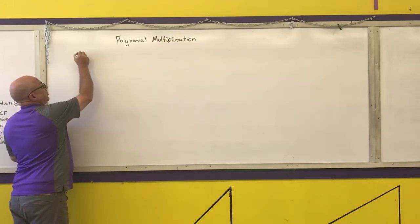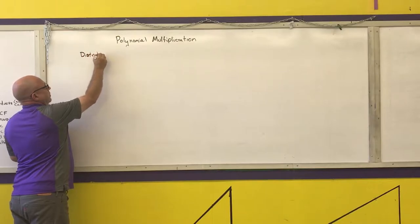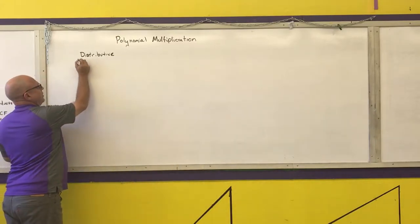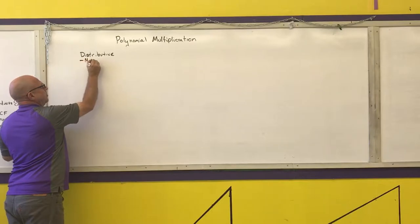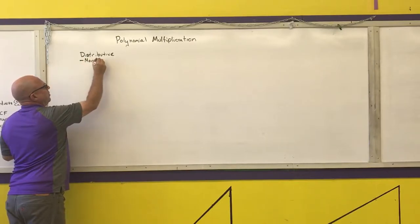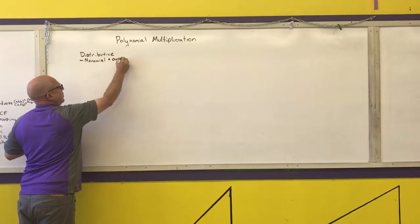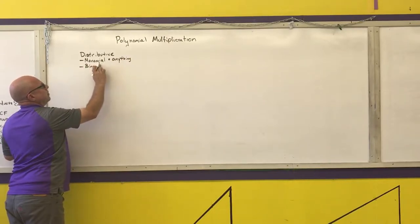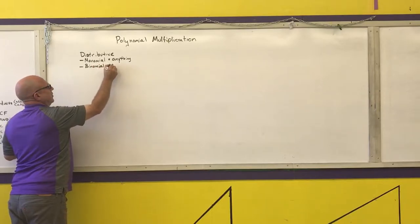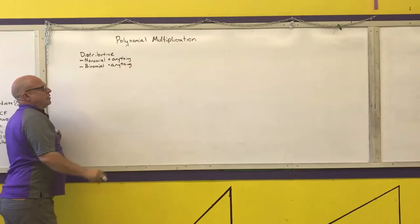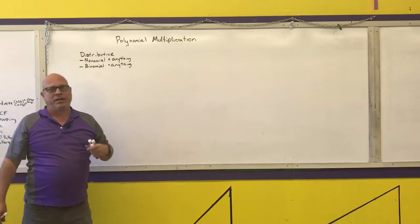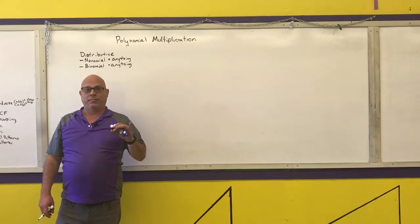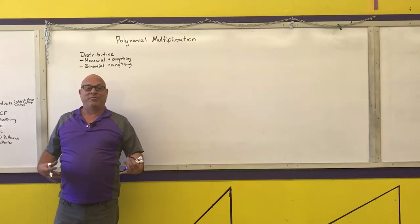The first method is the distributive method. You may use the distributive method in two cases: a monomial times anything, or a binomial times anything. Those are the only two cases. So if you have a trinomial times a trinomial, I don't want you using distribution — it becomes very messy. I'll show you why it gets really messy.